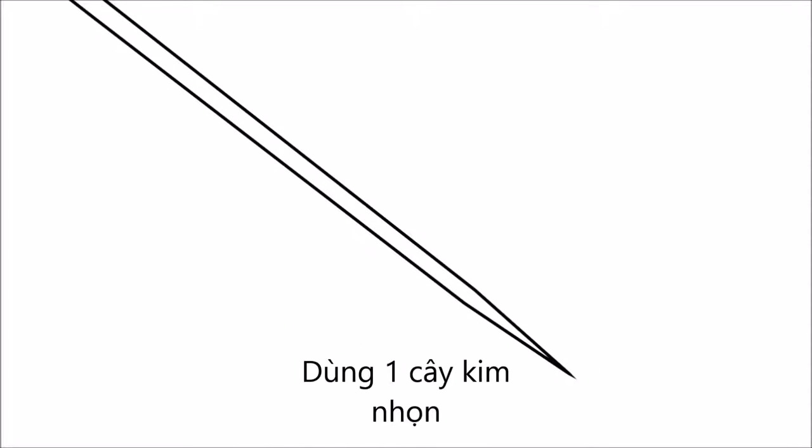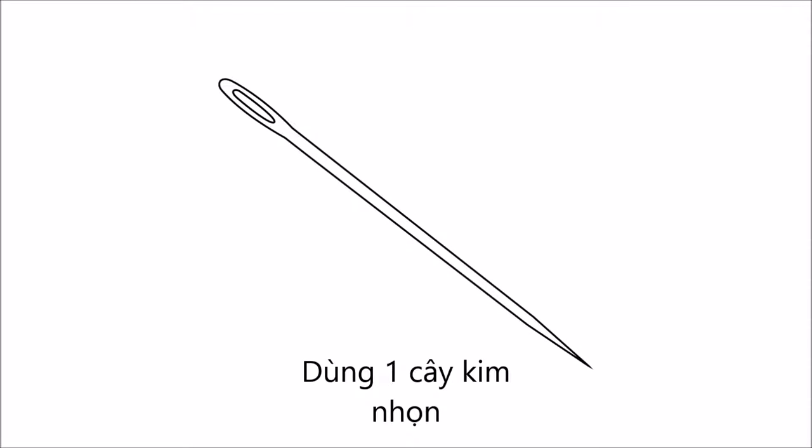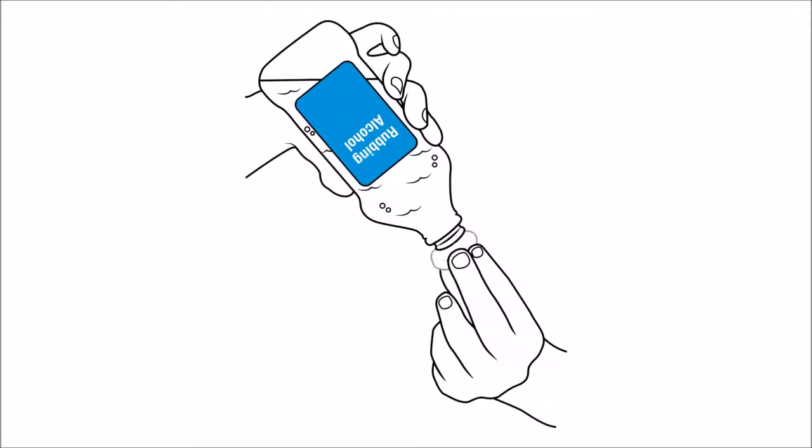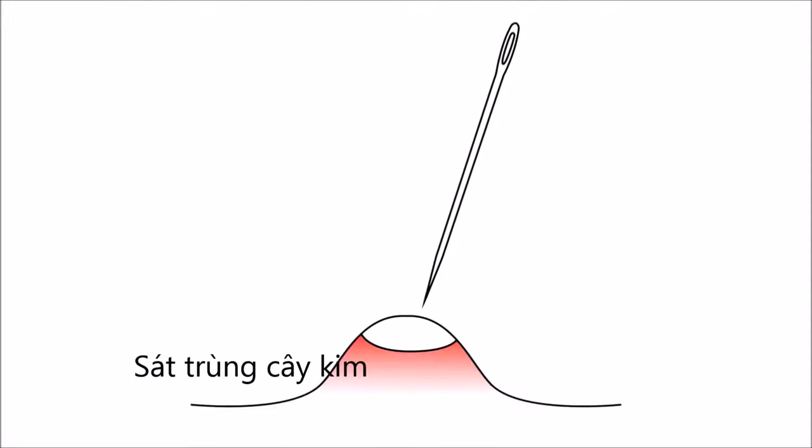First, get a needle. A sharp sewing needle is a good choice because they tend to be nice and strong and sharp. Disinfect the needle with rubbing alcohol and then gently prick the surface of the pimple.